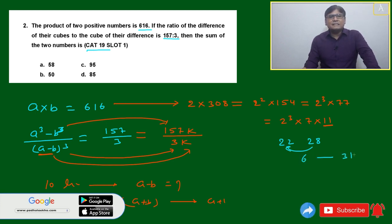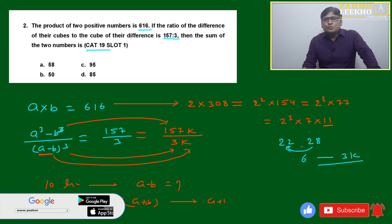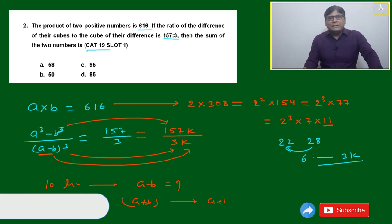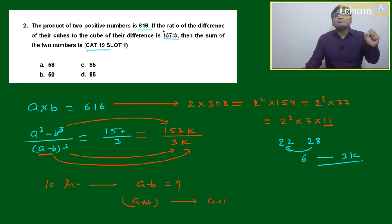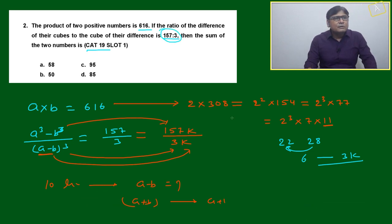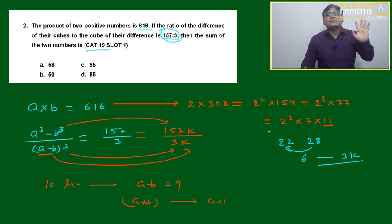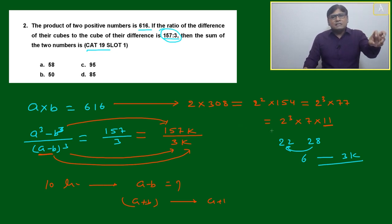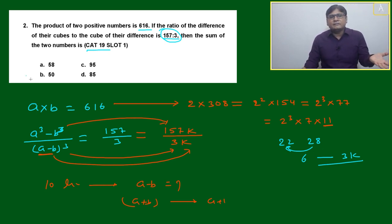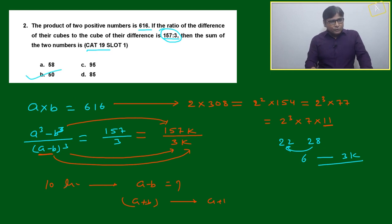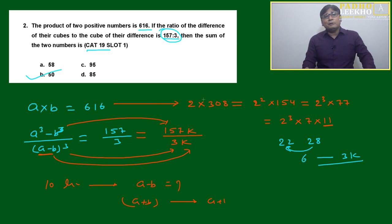The difference is 6, which is 3k with k equal to 2. So 22 and 28 are the only numbers that satisfy both the product condition and the difference being a multiple of 3. We are not using extra knowledge — just what is given in the question. So 22 plus 28 equals 50. You can mark the answer before even doing full algebra.